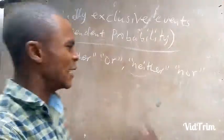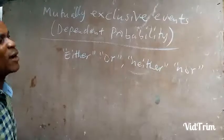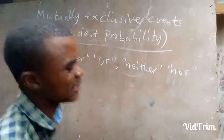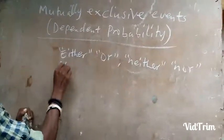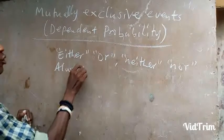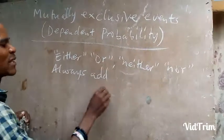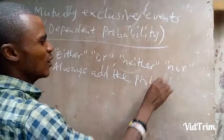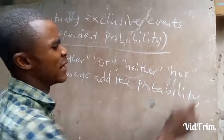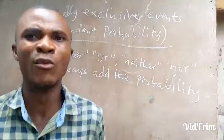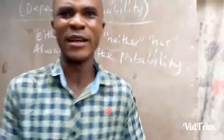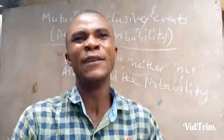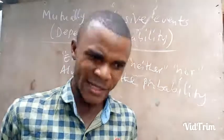Anytime you see these words on the question paper, what you do is you always add the two probabilities. Always add the probabilities. So anytime two events are mutually exclusive, we add them. Any two events that will not occur at the same time — we add the two probabilities to get the answer.